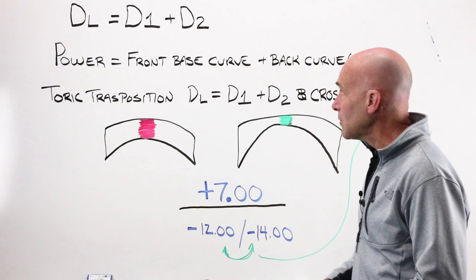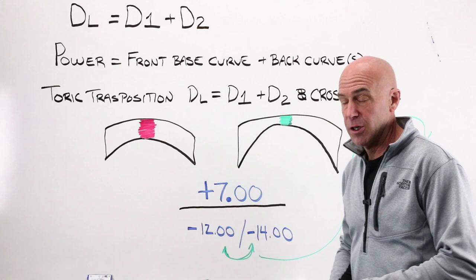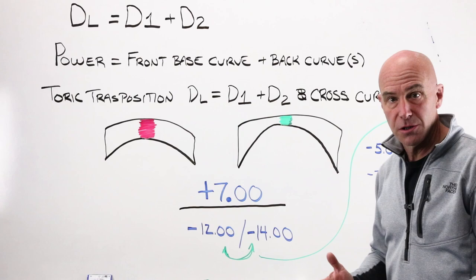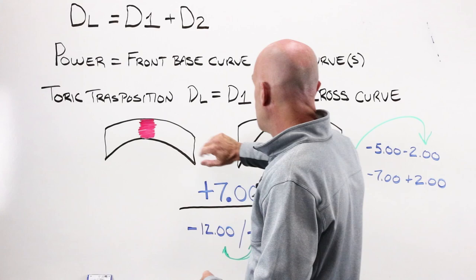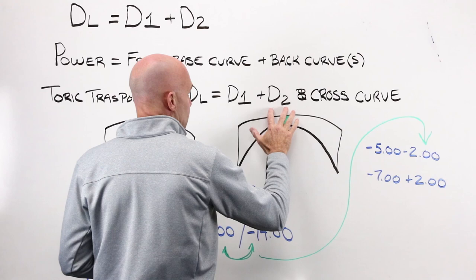What this goes into is what happens when we add some cylinder into it, so there's not just one curve, but two curves on the back of the lens. Toric transposition is the power of the lens is equal to the front base curve added to what's known as a toric curve, and then a cross curve.